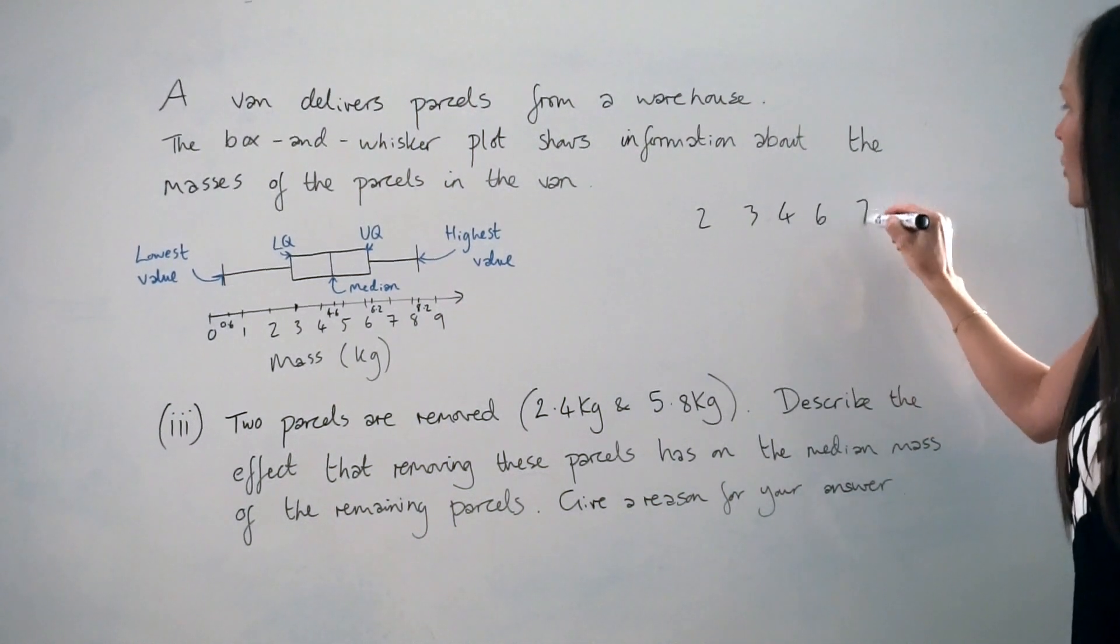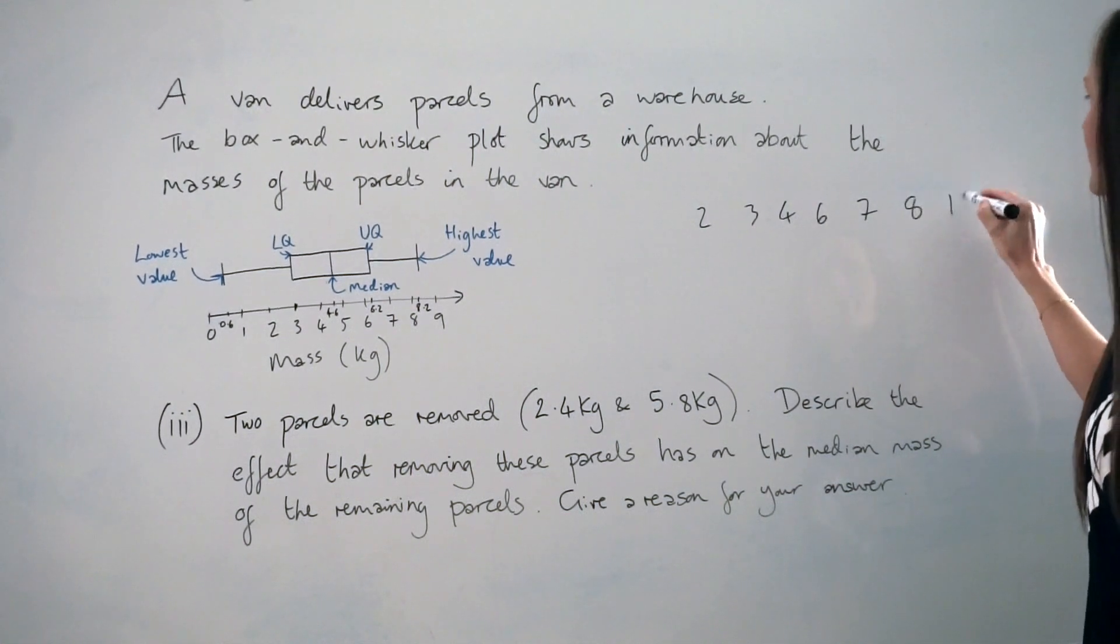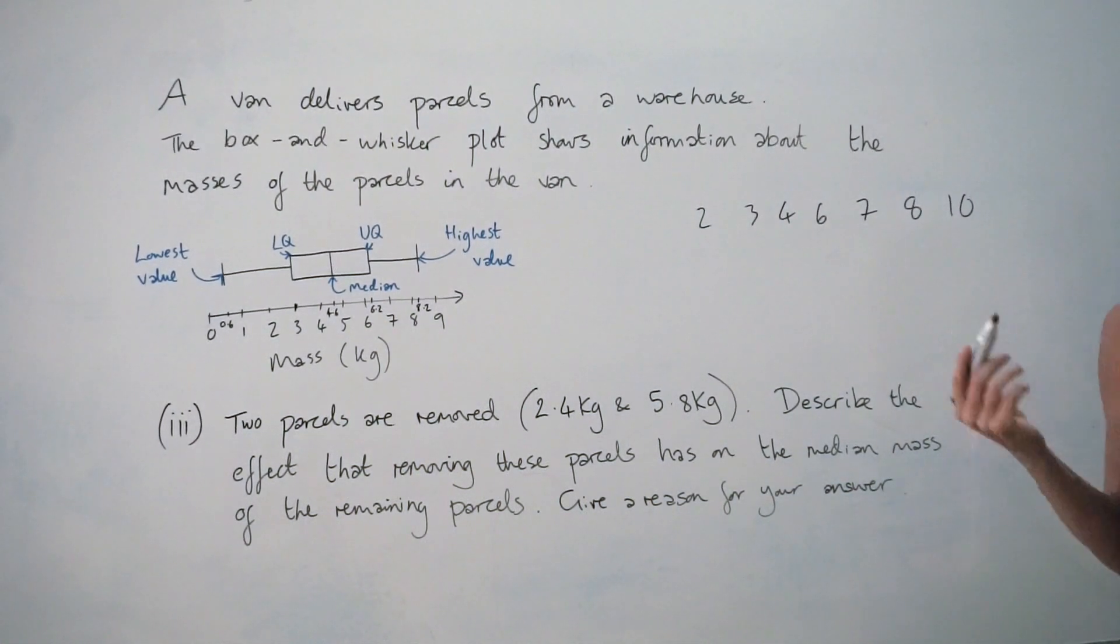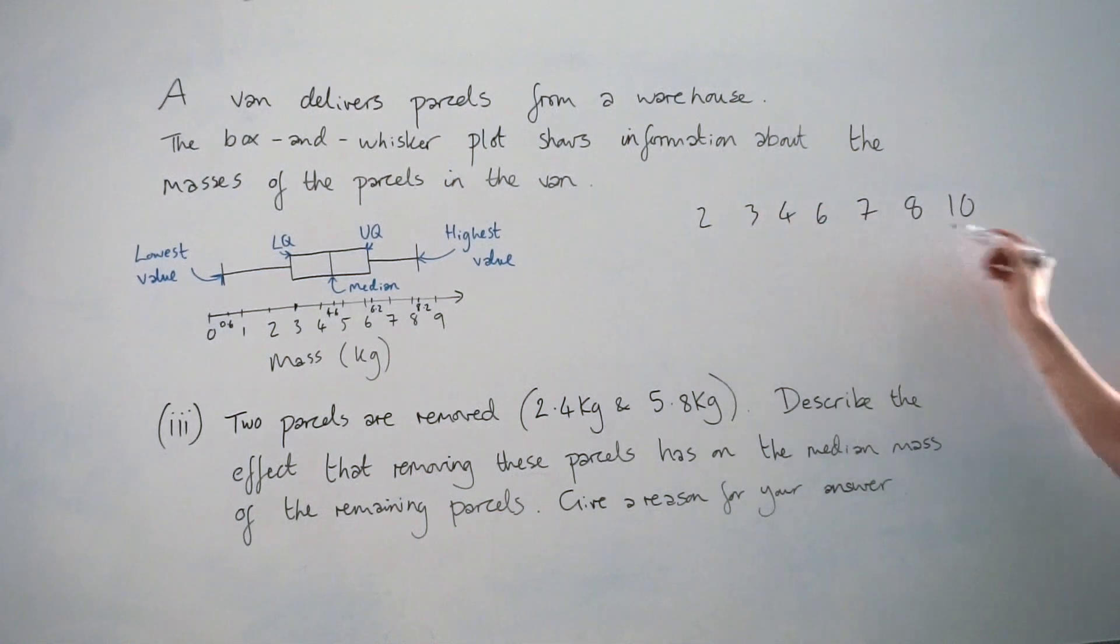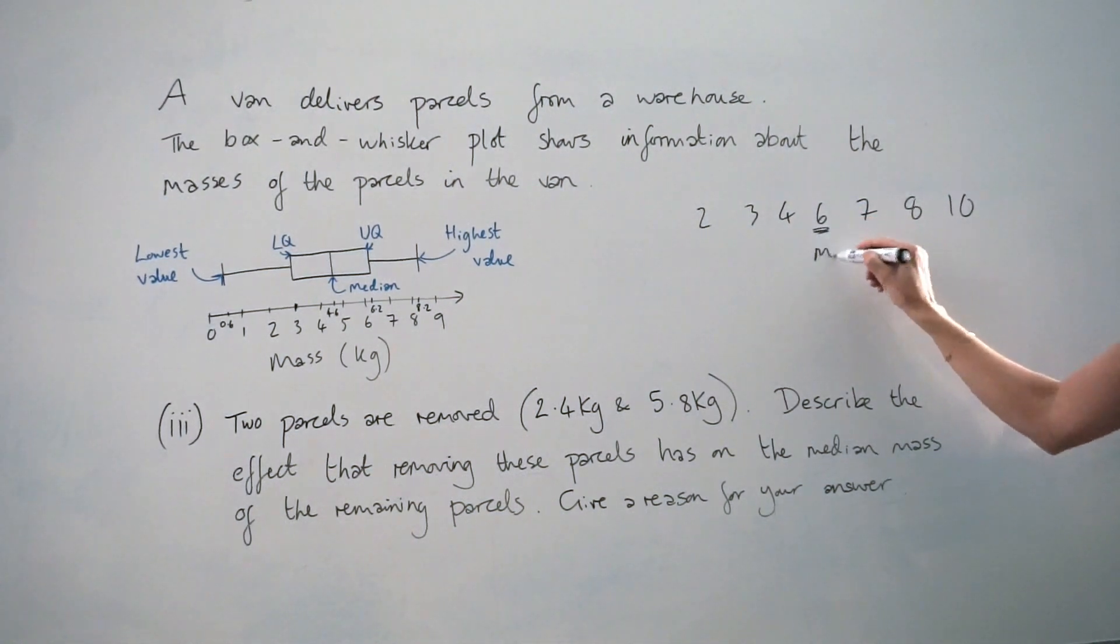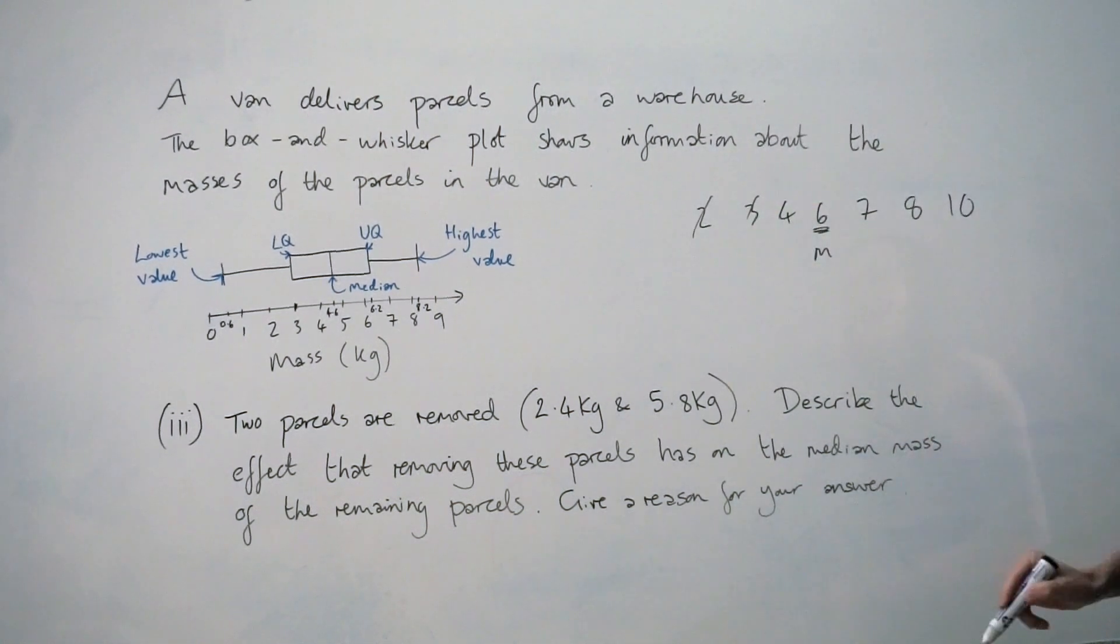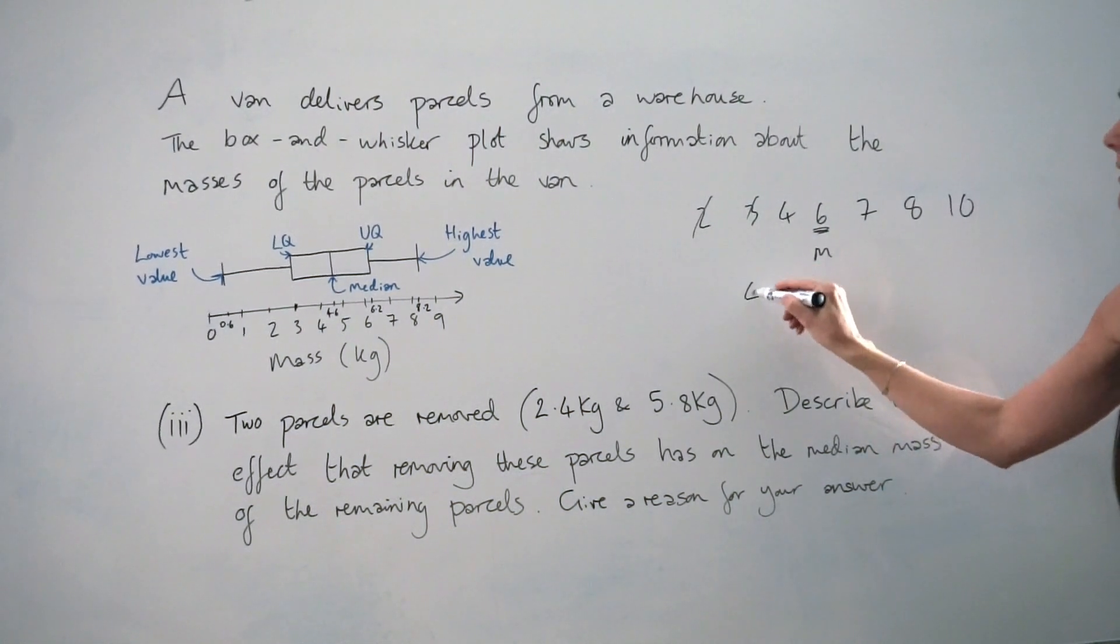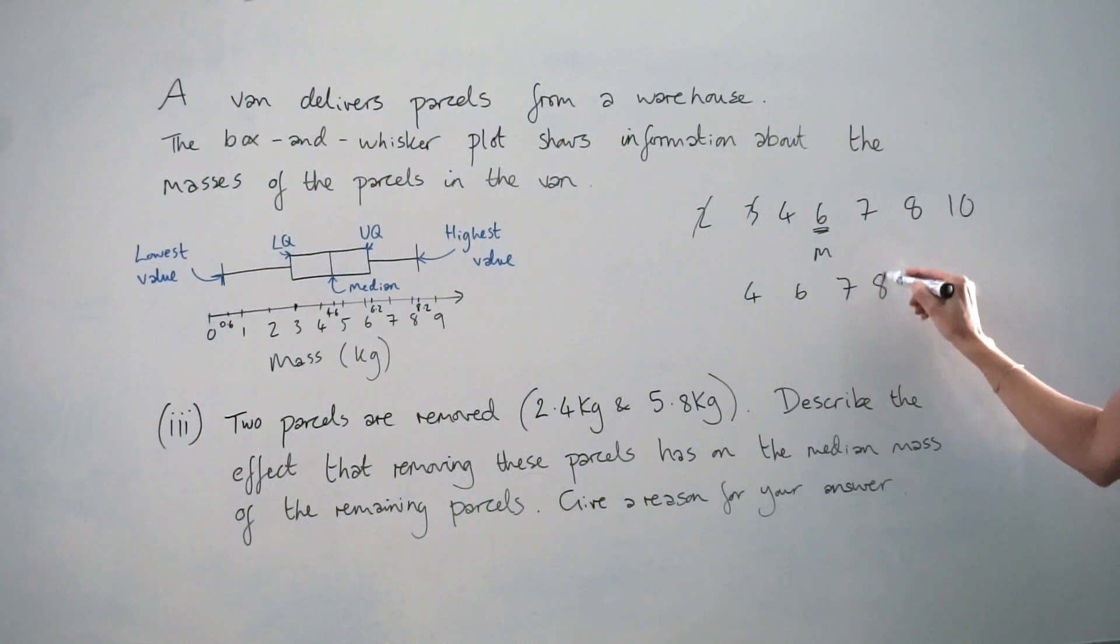Imagine this is our list of masses. Remember the median is the middle number. In this list of numbers, the median is 6. If I take two parcels that are smaller than the median, for example 2 and 3, it would leave me with this set of numbers here.